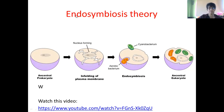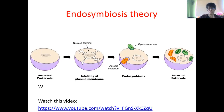But now the endosymbiotic theory is an explanation as to why eukaryotic cells have mitochondria with their own DNA, and why plant cells have chloroplasts with their own DNA as well.